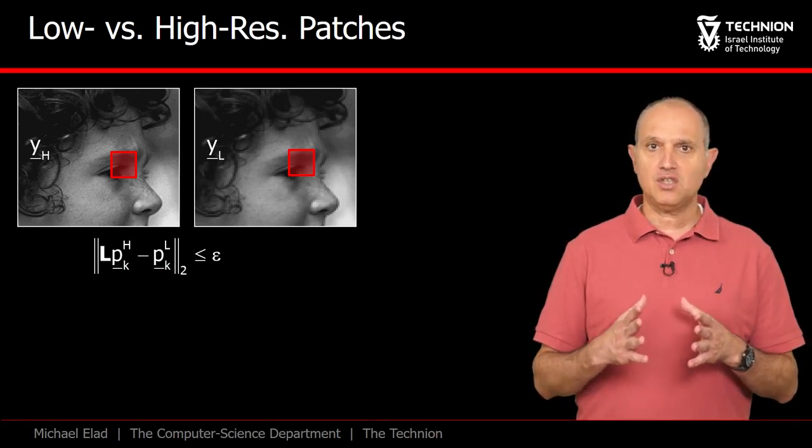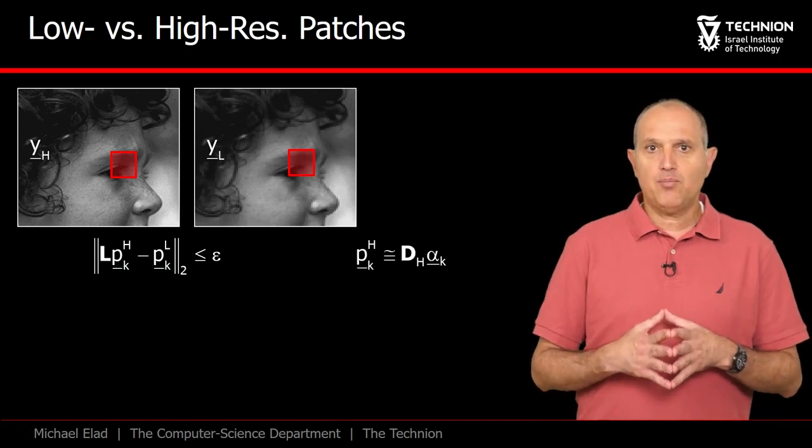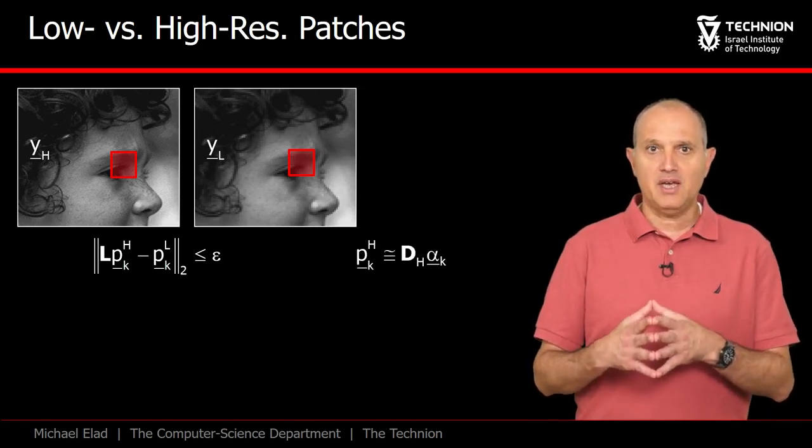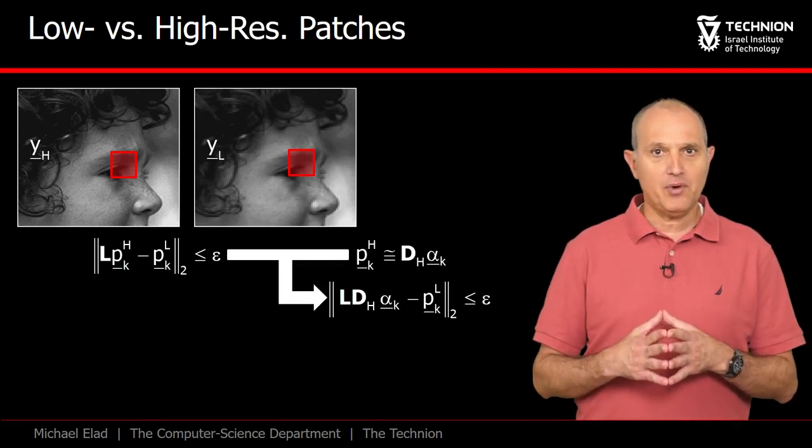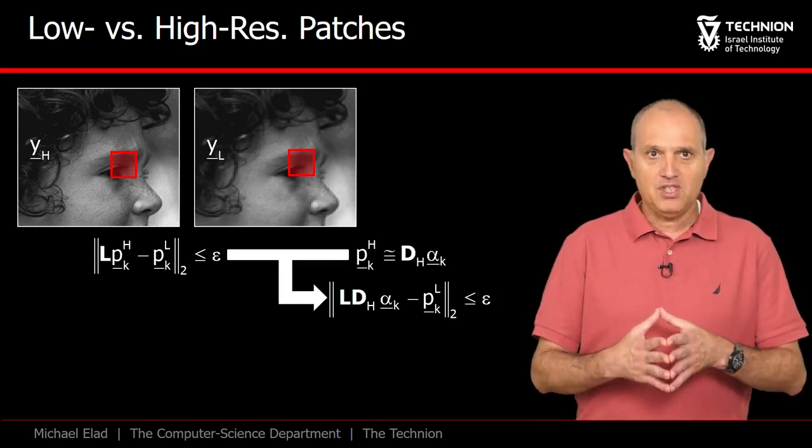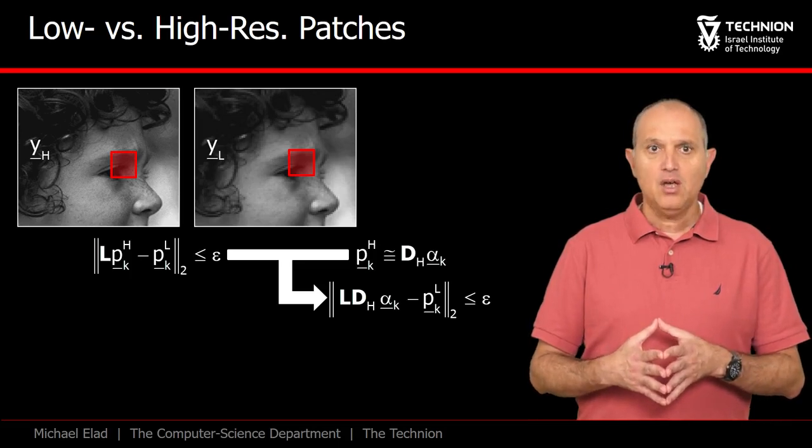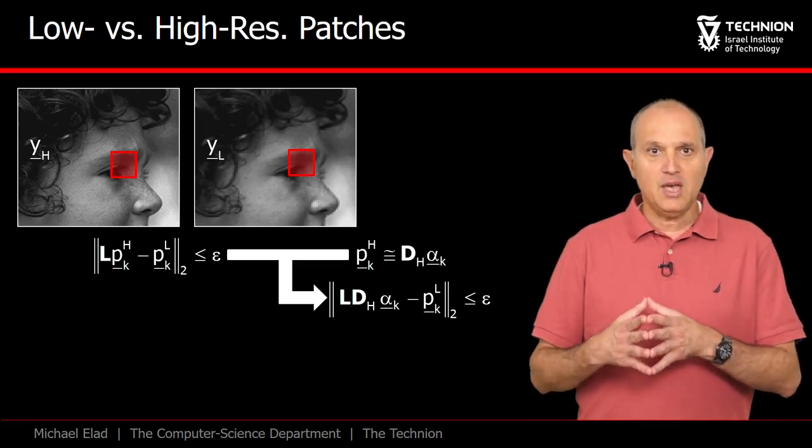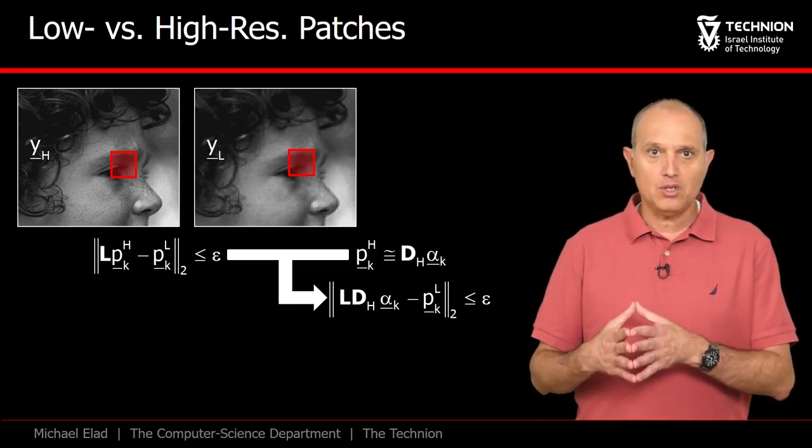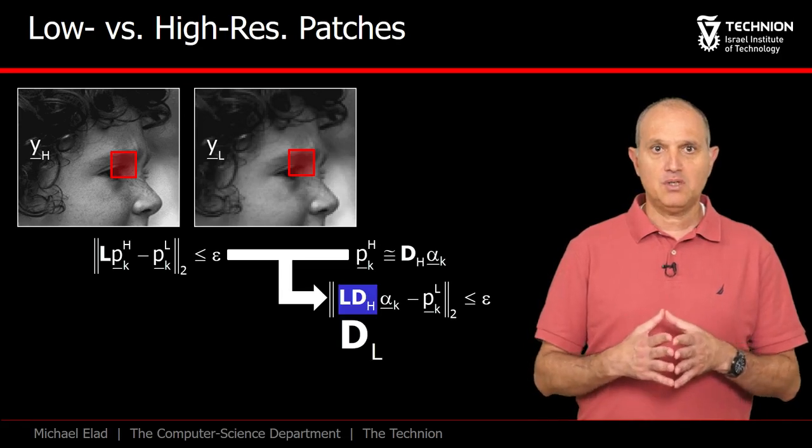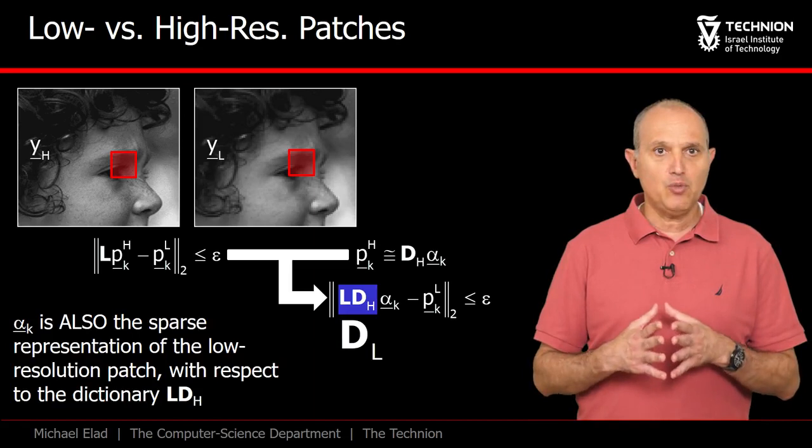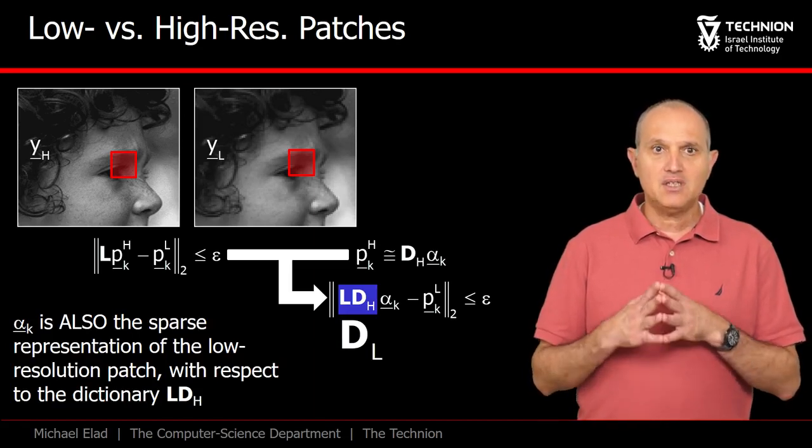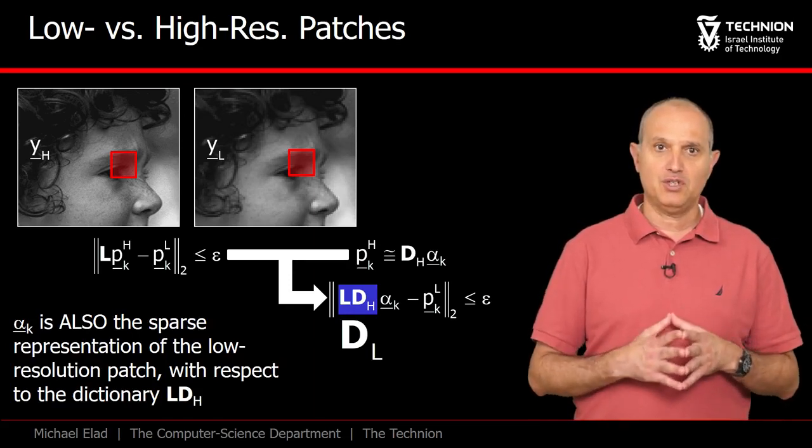We have just seen this connection. When merged with the prior on the high res patch pKh, we get this relation. We see here a linear operation on the very same sparse representation alpha k, producing something that is epsilon away from the low resolution patch. This matrix is our low resolution dictionary DL. And the key observation to make here is that the very same representation serves both resolution patches.